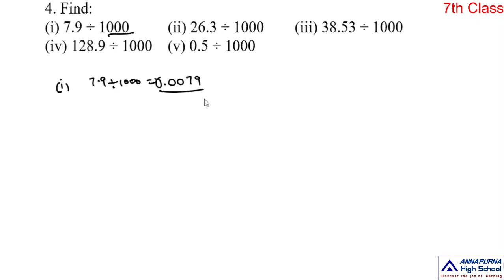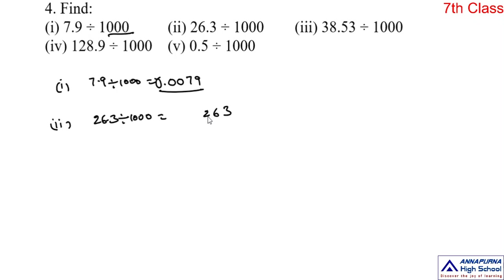The answer is 0.0079. Second one: division by 10, division by 100, division by 1000 — procedure is same. So, 26.3 divided by 1000. Write the number, ignore the decimal point. We should shift the decimal point towards left by three places: one, two — there is no third digit, put zero — then put point. Counting 1, 2, 3, put decimal point. No whole part, write zero. The answer is 0.0263.